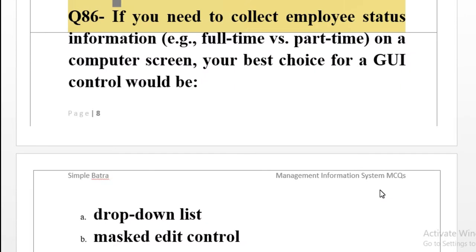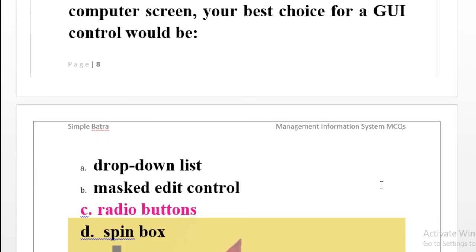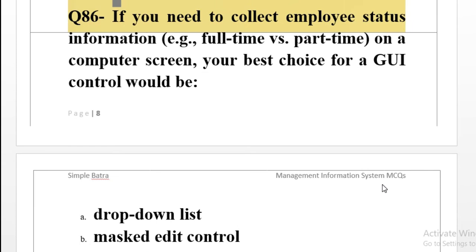Question number 86: If you need to collect employee status information, whether an employee is working full-time or part-time on a computer screen, your best choice for a GUI control would be: drop-down list, masked edit control, radio buttons, or spin box. Here we are collecting employee status input on a computer screen.